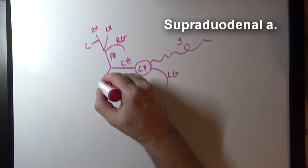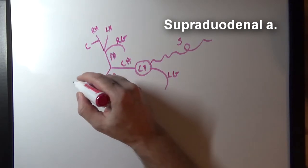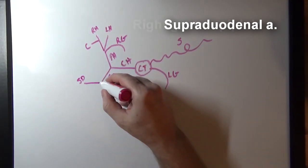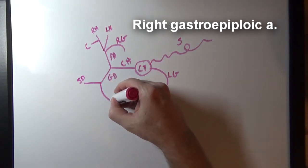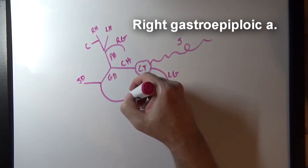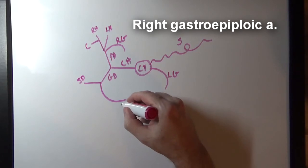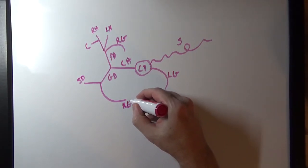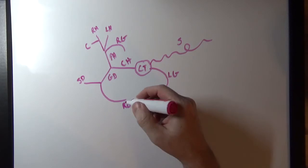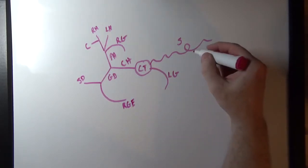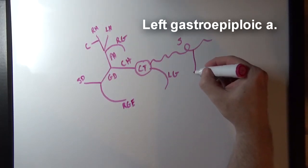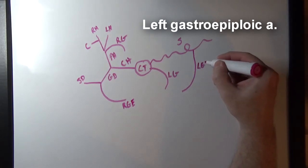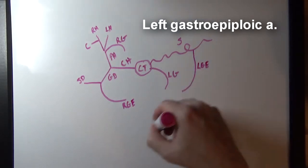From the gastroduodenal artery we have the supraduodenal artery, which goes to the superior part of the duodenum. The right gastroepiploic artery continues from the gastroduodenal artery and anastomoses with the left gastroepiploic artery, which comes from the splenic artery. Both of these vessels run along the greater curvature of the stomach.